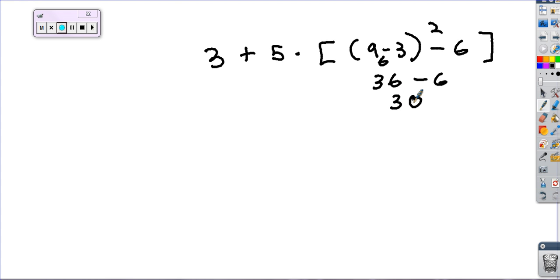So I did all my work. My brackets are done. Now I have 5 times 30. Using order of operations, 5 times 30 would be next. What would that be? One hundred and fifty. So now I have 3 plus 150. What do I get? One fifty-three. Perfect. So far so good?